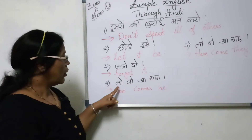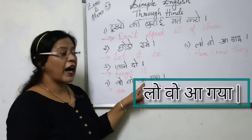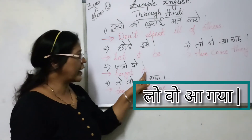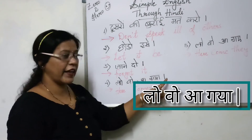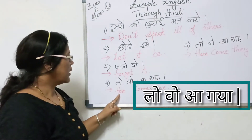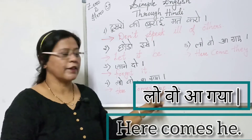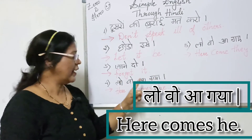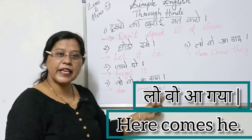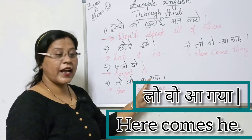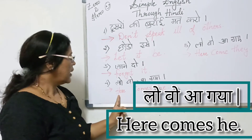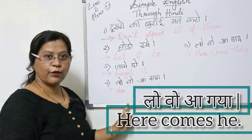Fourth sentence: 'Lo wo aa gaya.' This is singular — referring to one person. So in English, 'Lo wo aa gaya' means 'Here he comes' or 'Here comes he.' Since it's singular, we use 'he.'